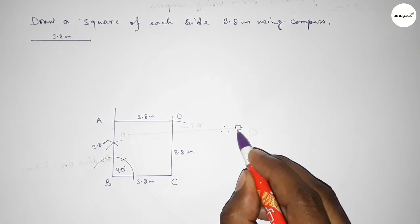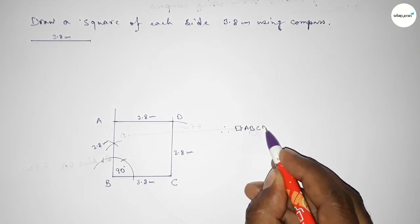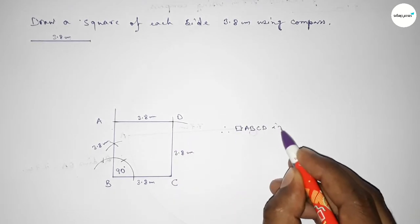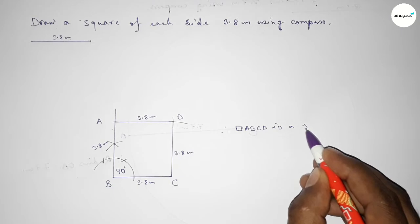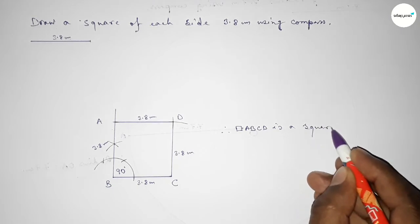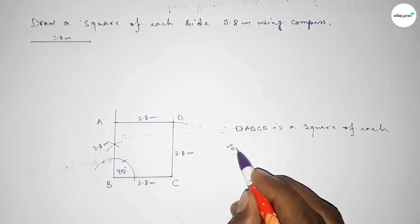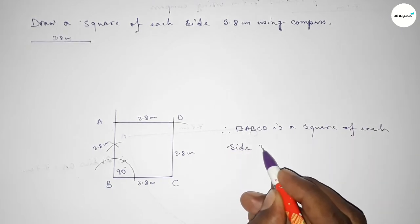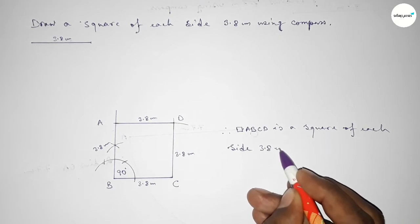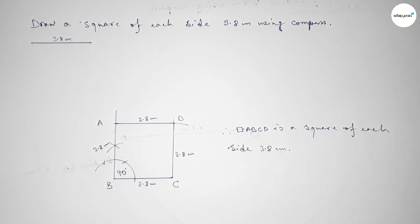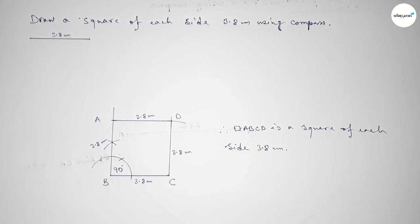So ABCD is a square of each side 3.8 centimeter. By this way we can construct a square of each side 3.8 centimeter. That's all, thanks for watching. If this video is helpful to you then please share it with your friends.